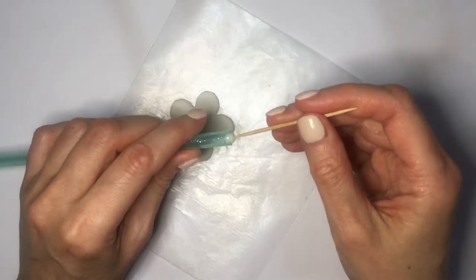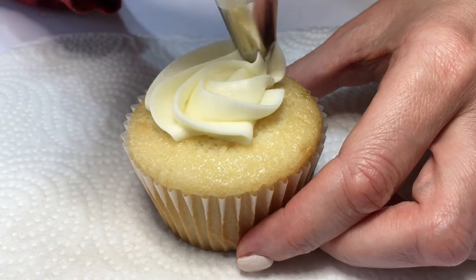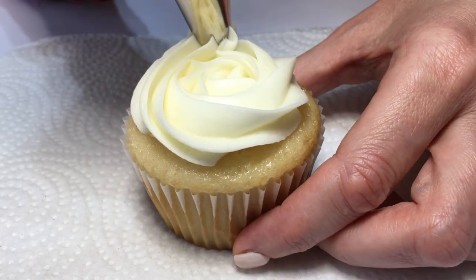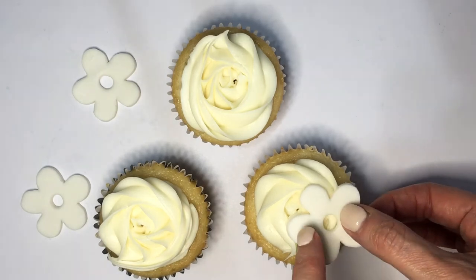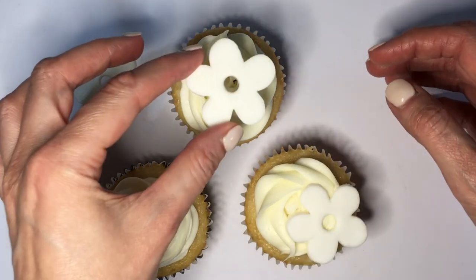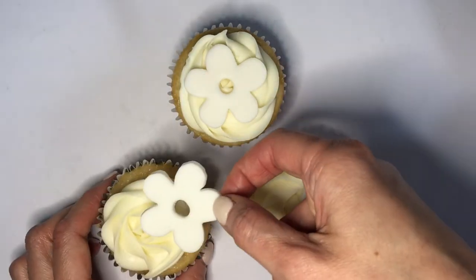For my cupcake, I'm using vanilla butter and then my frosting—I do have a review for this. The frosting is by Betty Crocker. Using my Wilton 1M tip, making a swirl. This is the Mark Jacobs inspired daisy toppers that I wanted to share with you.